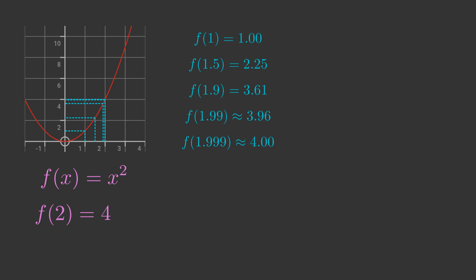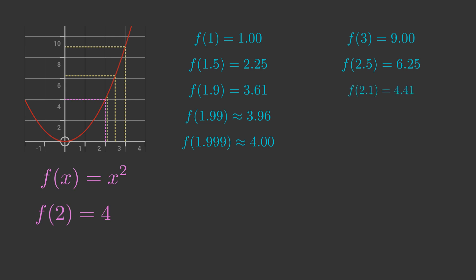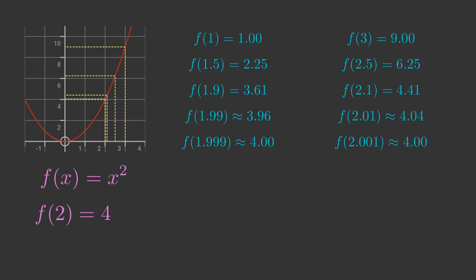We can repeat this from the other direction, using values of x that are greater than 2. When x is 3, y is 9. When x is 2.5, y is 6.25. When x is 2.1, y is 4.41. If we use x values of 2.01 and 2.001, y gets even closer to 4. We could keep going, using x values to get ever closer to 2, without actually reaching 2.